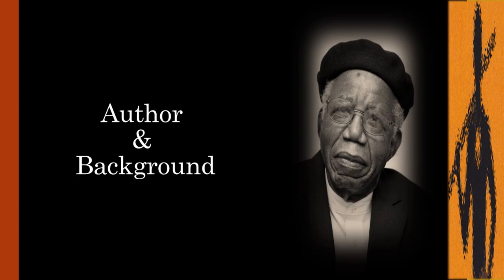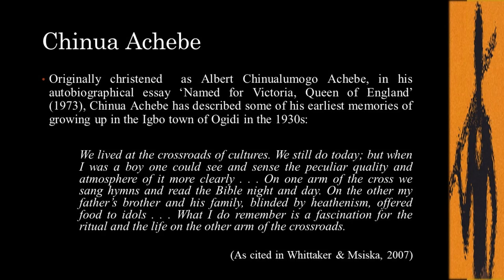Next, we'll look at some important facts about the author and his background. Achebe's father had been converted to Christianity as a young man, and Achebe himself was originally christened as Albert Chinualumugo Achebe and had a strict Christian upbringing. At the same time, he grew up surrounded by neighbors and extended family who continued to practice Igbo traditional religion and follow its various rituals and festivals. Achebe explained that he lived at the crossroads of culture, which undoubtedly gave him an insight into both cultures without romanticizing either.